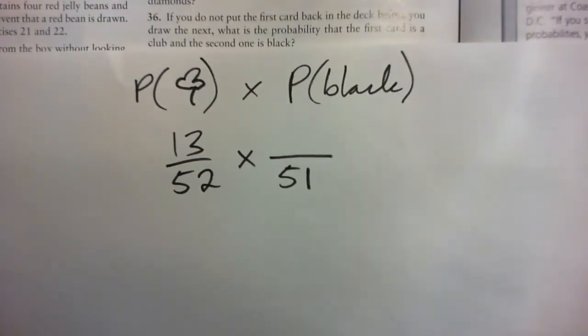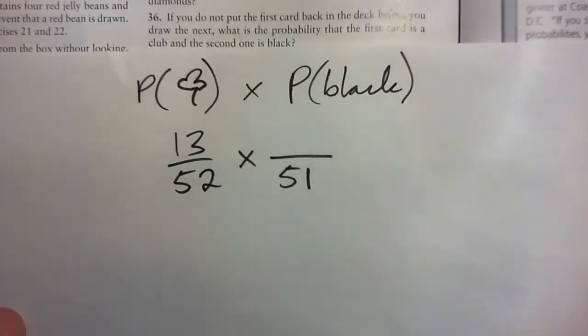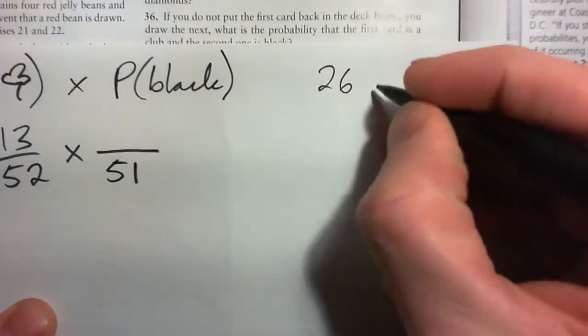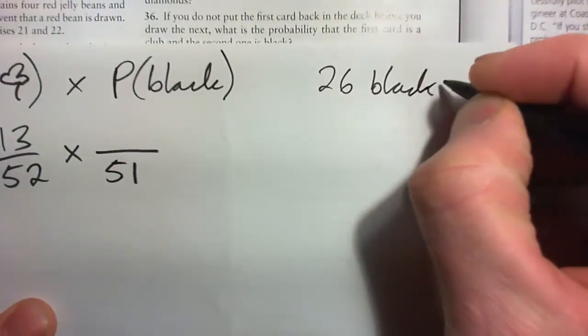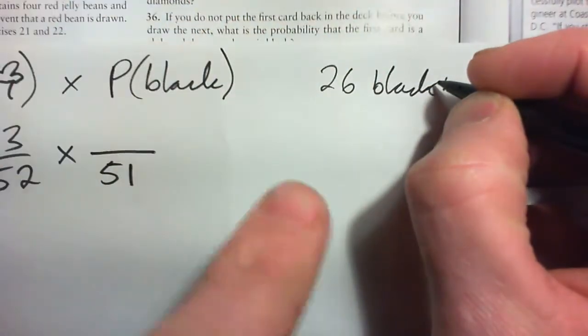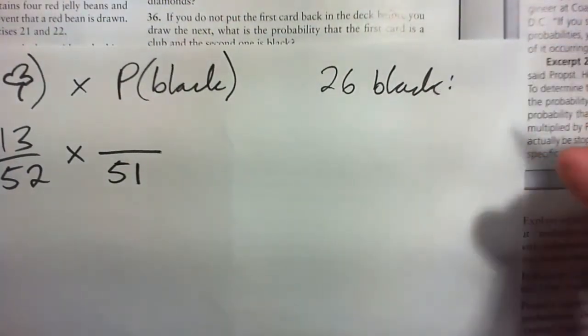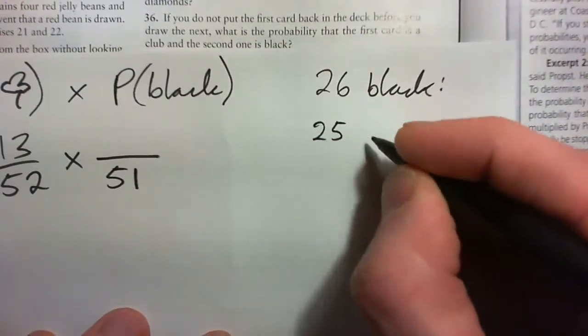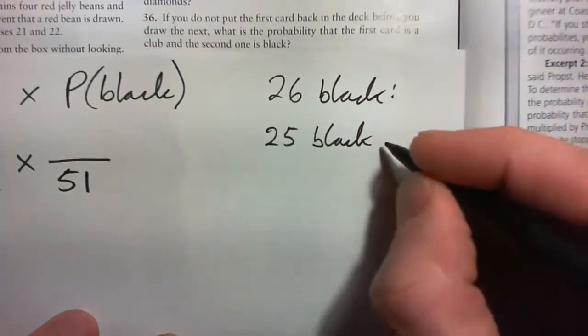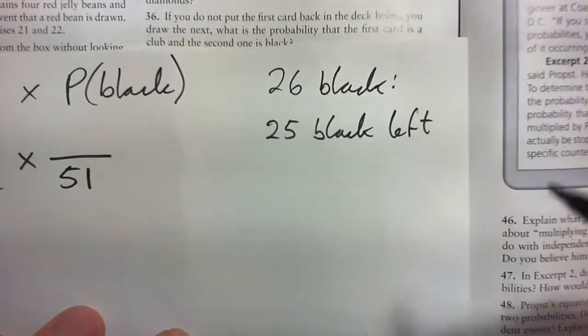Now watch out here because you start actually with 26 black cards, but guess what just happened - we pulled out a black card. See that was pulled out and thrown away and it wasn't put back in the deck. And so now we have 25 black cards left.